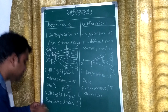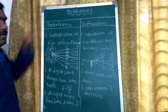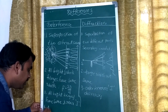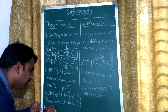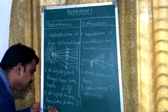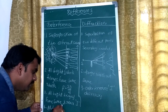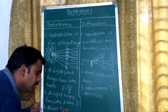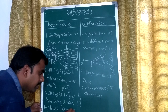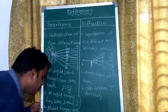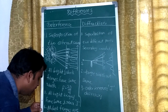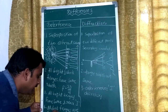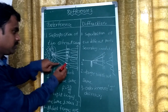The final point in interference is that all dark fringes have zero intensity.